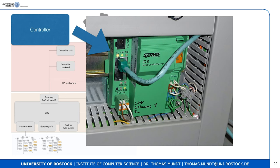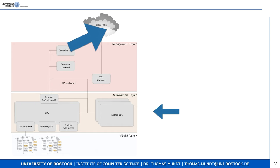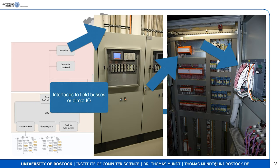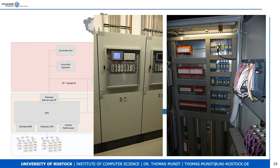The field bus here is on the lower left side — it's LON. You can see the difference: it's just a two-wire cable, which makes those controllers and networking very cheap. Interfaces to field buses or direct I/O — there are a lot of cables getting in. I'll give an overview of the different protocols later on.